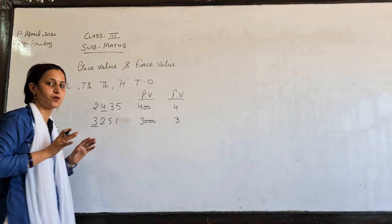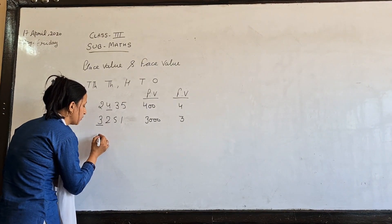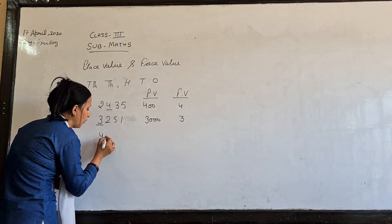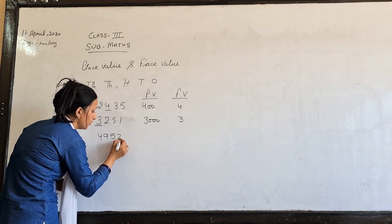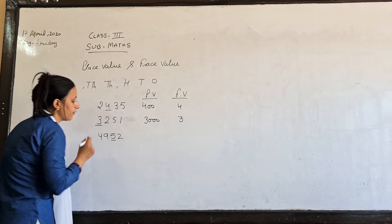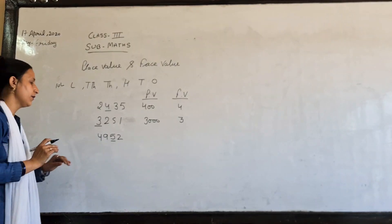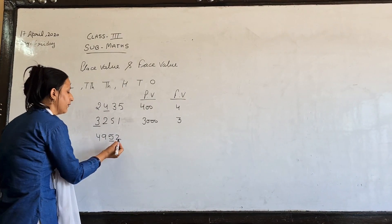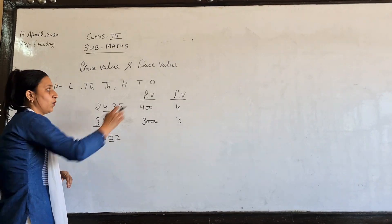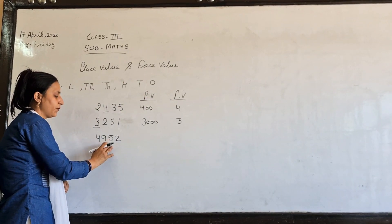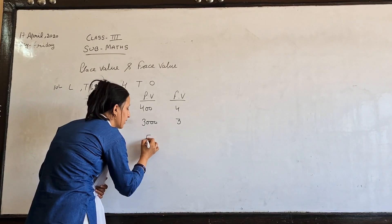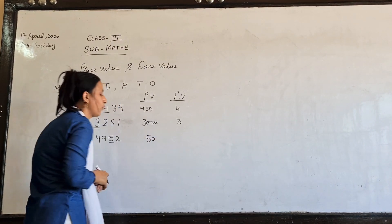So we have 4, 9, 5, 2. Now I have 5 here. Now we have 5 to place value: once, 10, 5 at 10 place. Once, 10, 10 place. So 5 is 5 times 10, which is 50.